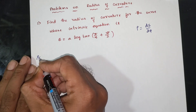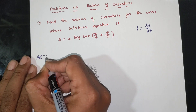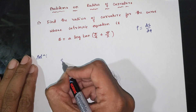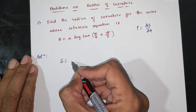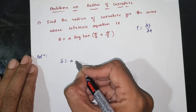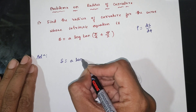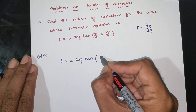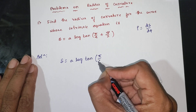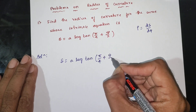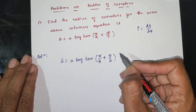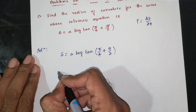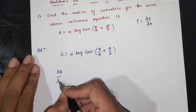So we have s = a·log(tan(π/4 + ψ/2)). To find ds/dψ, we differentiate with respect to ψ.